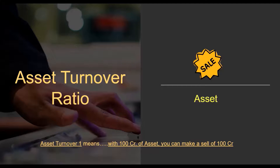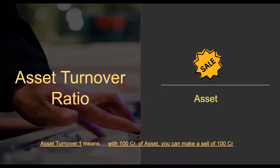The calculation of asset turnover is simply sale divided by asset. So if we take the sale of a company and divide it by its asset, we get the asset turnover ratio. If your asset turnover is 1, it means 100 crores of asset generates 100 crores of sale. If it is 2, then 100 crores of asset generates 200 crores of sale. If it is 0.5, then 100 crores of asset generates only 50 crores of sale.